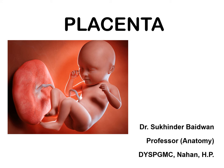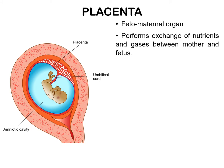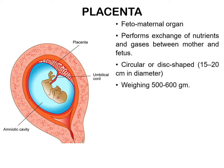The placenta is a temporary organ which is formed during pregnancy and expelled out of the uterus after childbirth. It forms an important circulatory link between the mother and the fetus. It mainly performs the exchange of nutrients and gases between the mother and fetus, hence called a fetomaternal organ. It is circular or disc-shaped, approximately 15–20 cm in diameter and weighs 500–600 grams.